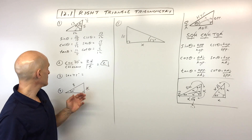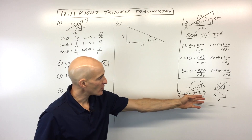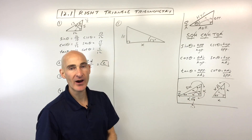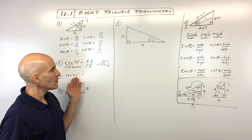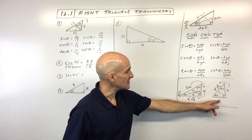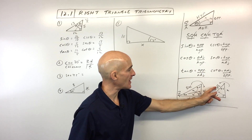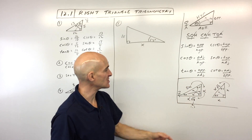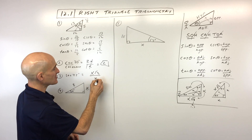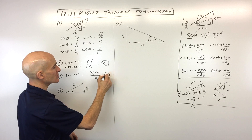For number 3, secant of 45 degrees. Using the 45-45-90 special right triangle, the secant is the reciprocal of cosine — hypotenuse over adjacent. That's X square root of 2 over X. The X's cancel, so we just get square root of 2. Secant of 45 degrees equals square root of 2.